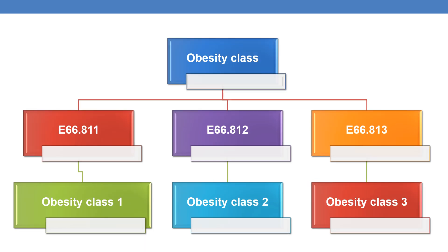Coming to obesity class, E66.811 is given for obesity class 1, E66.812 is given for obesity class 2, and E66.813 is given for obesity class 3.